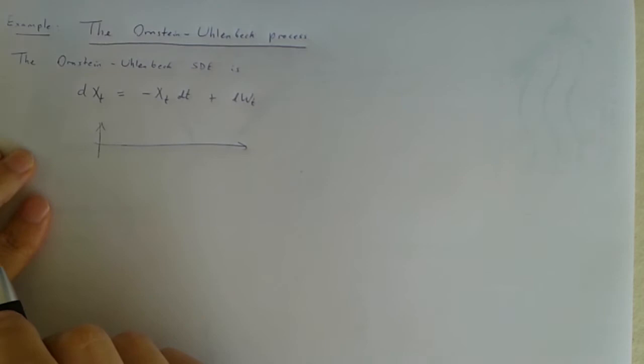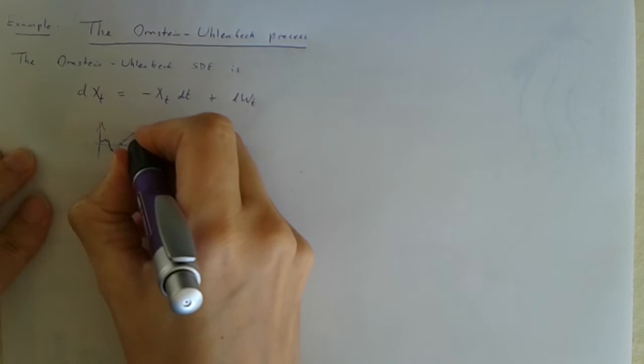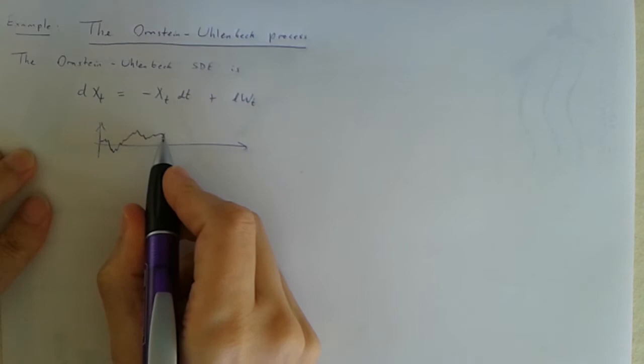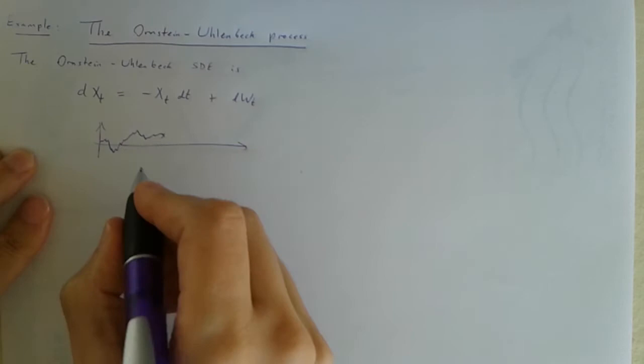Let's just draw a sketch of the way we expect the solution of this equation to behave. It means that it starts somewhere. It does the usual Ito diffusion thing of randomly wandering around on a jagged path. But what it's doing is whenever it's got a positive value its drift is negative, so it's drifting back towards a value of zero.